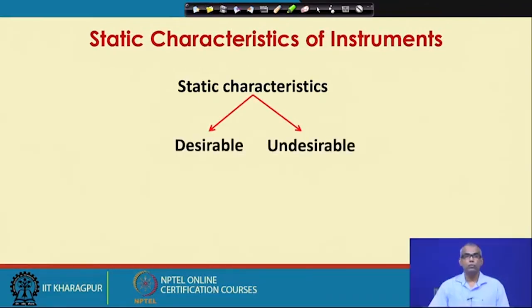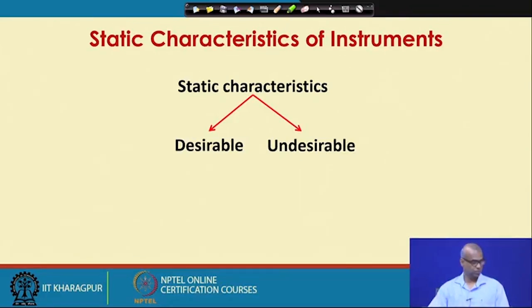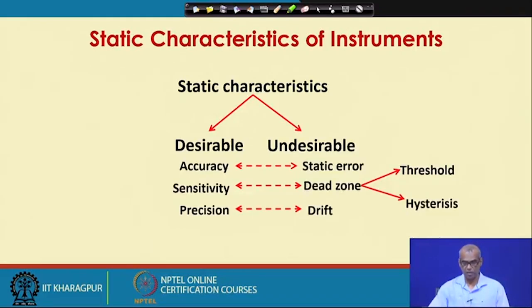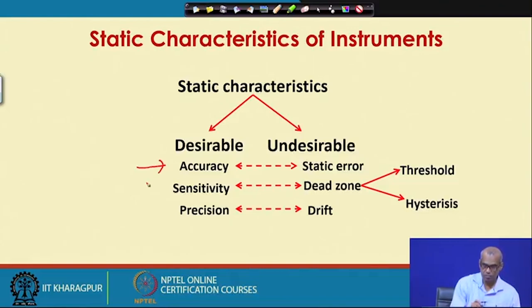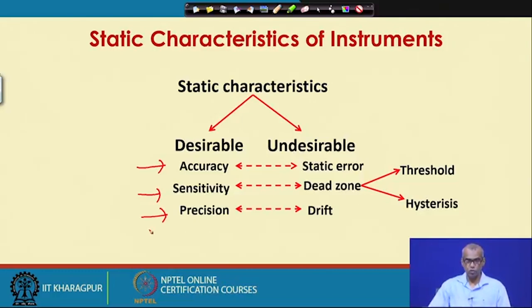There are certain static characteristics which are desirable — we want them present in our instrument systems — and certain static characteristics which are undesirable, meaning we want them to be present as minimally as possible. Broadly, static characteristics can be divided into two categories: desirable and undesirable. Examples of desirable static characteristics include accuracy, sensitivity, and precision.